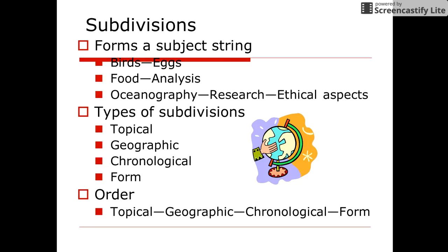There are four types of subdivisions and they appear in a specific order in the subject string. They are topical, geographical, then chronological, then form. If you use a form subject heading, it is not necessary to also include a form subdivision. It is probably easier and more efficient to use the form subdivision for most works.